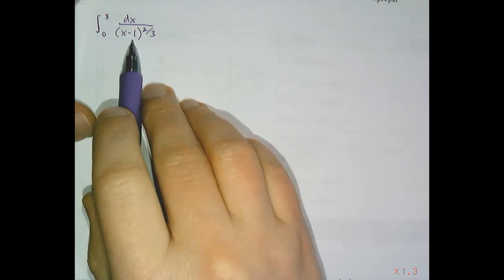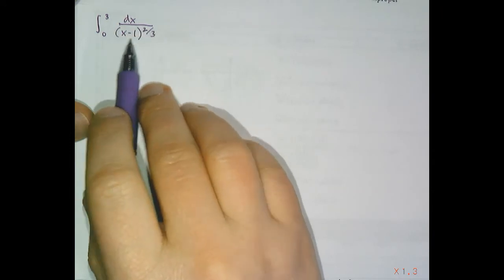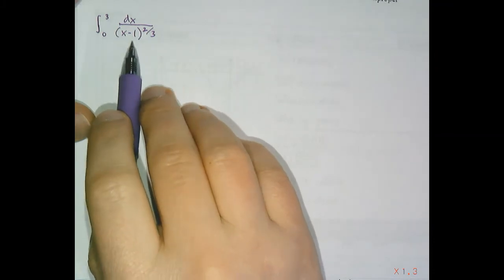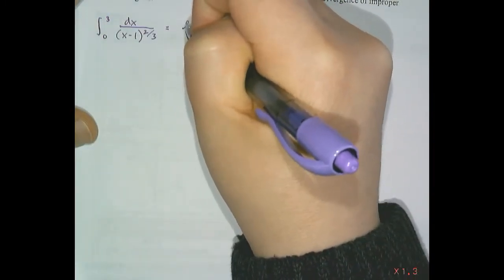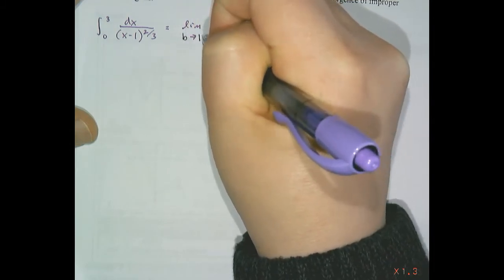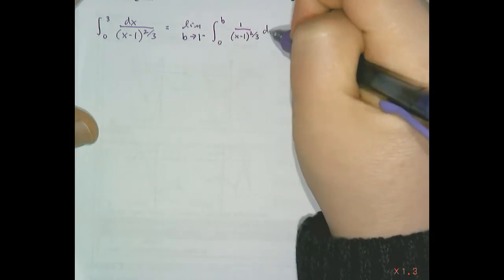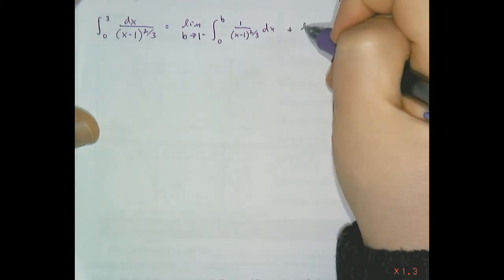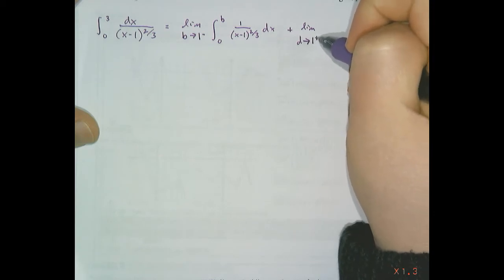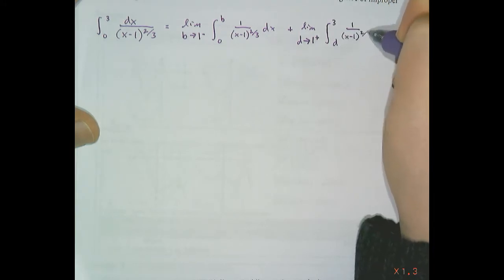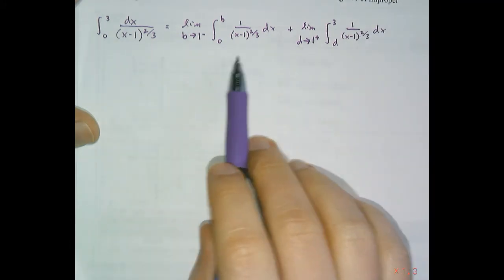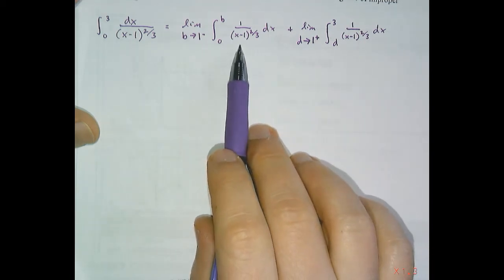Continuing to example 1b, we have an improper integral very similar to the previous one. At x equals one, the denominator is zero, making this integral improper because we have a vertical asymptote at one. We can separate this improper integral into two expressions: the limit as b approaches one from the left of the integral from 0 to b of one over (x minus one) to the two-thirds dx, plus the limit as d approaches one from the right of the integral from d to 3 of one over (x minus one) to the two-thirds dx. We must split it because the integral is improper on both sides of x equals one.